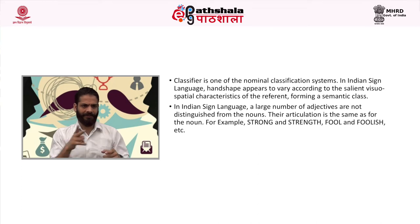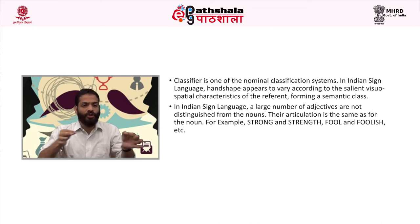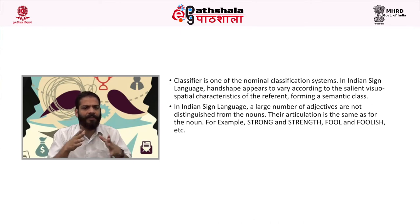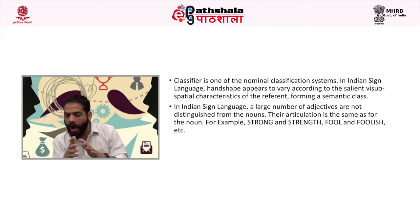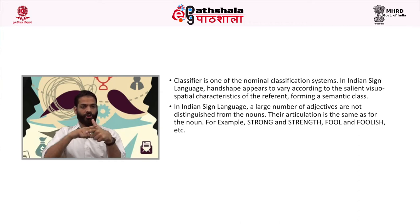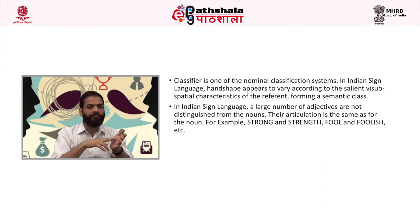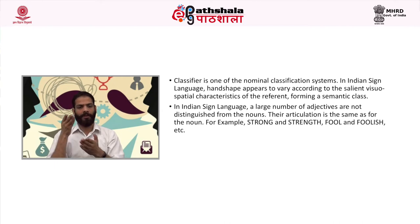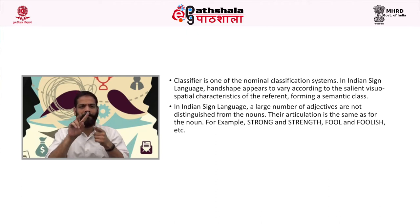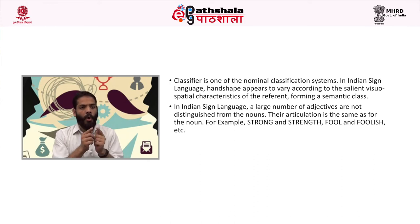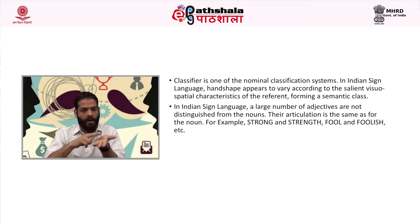Nouns like colors, shape and size, and perceptual states are formed into adjectives without change in articulation. However, they are distinguished from nouns on the basis of their occurrence in the sentence or by morphological properties. On the other hand, some adjectives like clean are derived from the verb clean with a change in the movement, while other formational parameters remain the same. The verb clean is articulated with small reduplicated movement, whereas the adjective is articulated with a single movement.